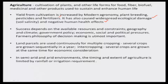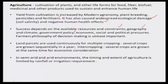The success of crop production depends on resources and constraints — geography and climate, government policy, economic, social and political pressures. But the farmer's philosophy of decision making is also important.